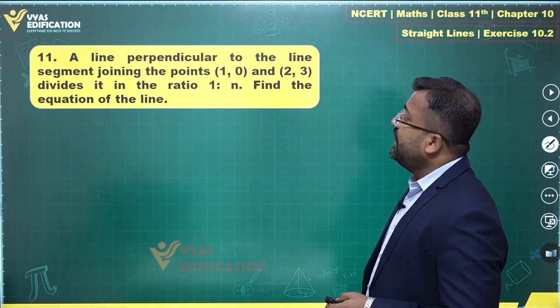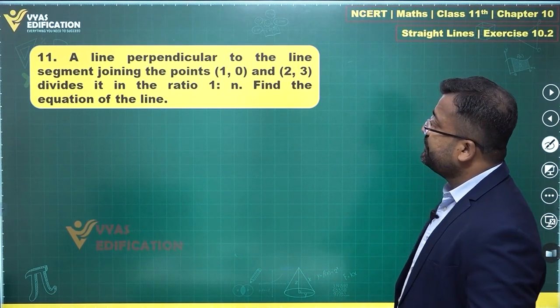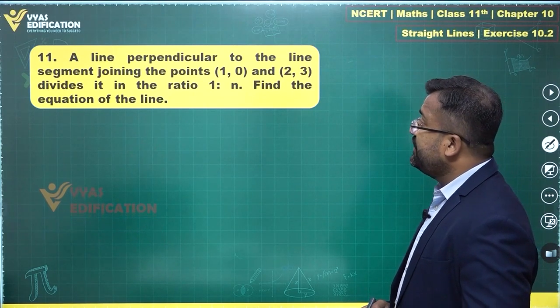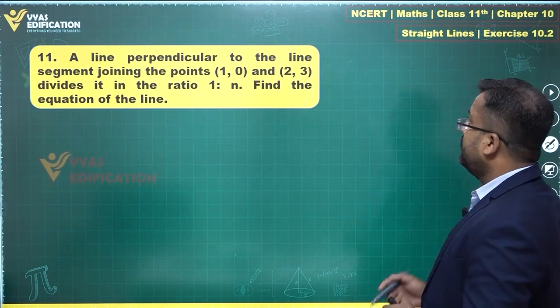The 11th question says a line perpendicular to the line segment joining the points (1,0) and (2,3) divides it in the ratio 1 is to n. Find the equation of the line. Let's talk about this.